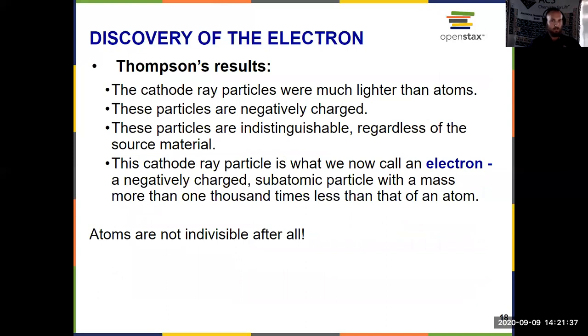And here's a summary of Thompson's results. We knew that the electrons, which weren't even called electrons yet, he was calling them cathode ray particles, were lighter than atoms. They had a negative charge, and it didn't matter what type of metal, what type of atom they came from. Regardless of the source material, these particles were the same.